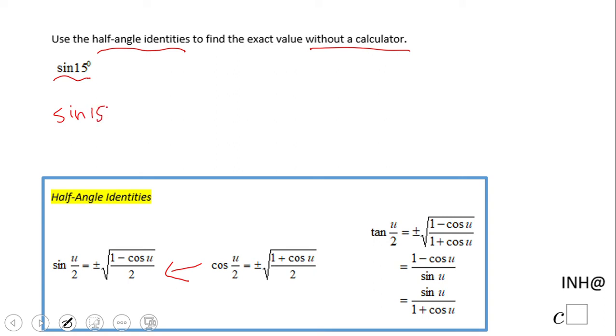Since it's sine, this is the formula I'm going to use. Sine of 15 in this case will be half of 30 degrees, right? So we're going to have here plus or minus square root of 1 minus cosine of 30. We double over 2.